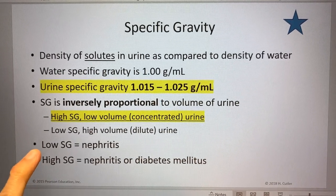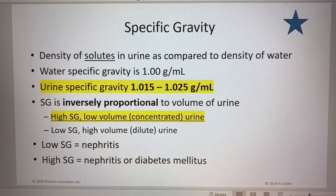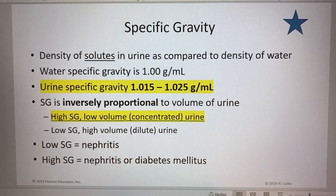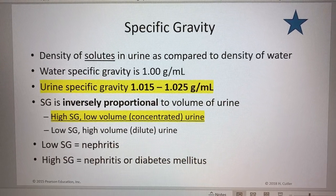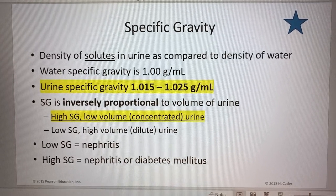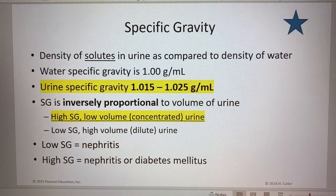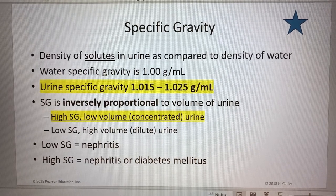If a patient has a low specific gravity, they could have nephritis. If they have a high specific gravity, they could also have nephritis and/or diabetes mellitus — further tests would be needed to determine those. What's important to know is the definition of specific gravity, water's specific gravity, and urine specific gravity, and what that says about the patient's urine: is it concentrated (high specific gravity, low volume) or diluted (low specific gravity, high volume)?